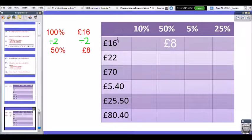If I know that £16 is 100%, to find 50%, remember we said 50% just means divide it by 2, or half it, and half of £16 is £8. So I'm going to write £8 in my table like this.